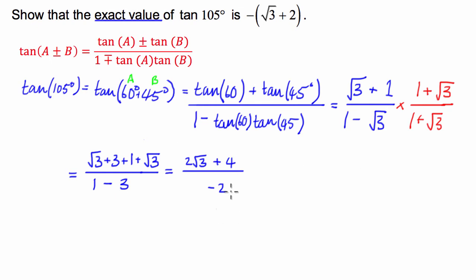So from here guys what we're going to do is we're just going to use a little bit of algebra to make this look like this. So what we're going to do first is I'm going to factorize the numerator by 2 so I have 2 in brackets the square root of 3 plus 2 over negative 2.